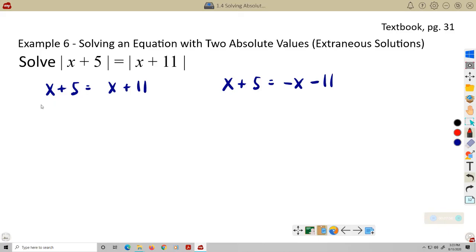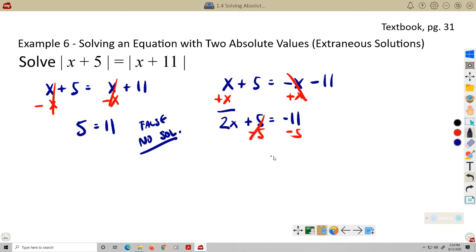So this would be interesting. If I subtract X from this side and X from this side, they're going to cancel out altogether. And I get 5 equals 11. So this is a false statement, which means this yields no solution over here. Over here, let's see what happens if I add X to both sides. And again, I like to try and keep things positive, getting rid of the negative X if I can. So I have 2X plus 5 equals negative 11. And then subtracting 5 from both sides, 2X equals negative 16. Dividing both sides by 2, X equals negative 8.